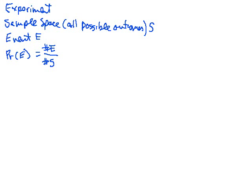In the previous video, we discussed the basic idea of probability. We saw that you need a certain context, which was given by an experiment. From the experiment, we found a sample space — the collection of all possible outcomes — and we would be interested in the probability of an event, namely the likelihood of a collection of these possible outcomes occurring. We calculated it by looking at the fraction of times that the desired outcomes occurred among all possible outcomes.